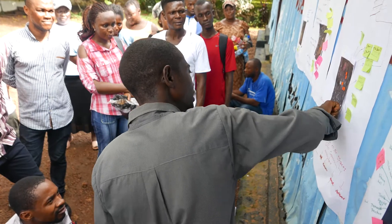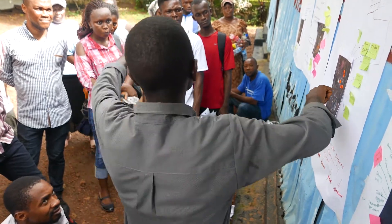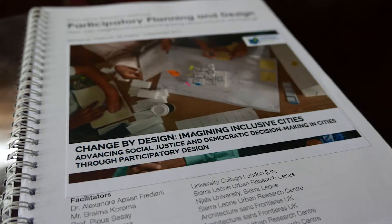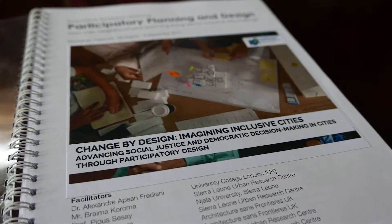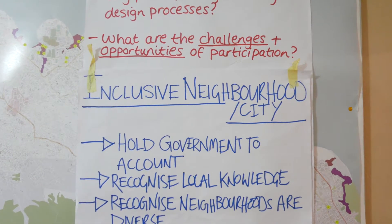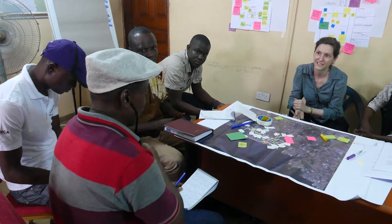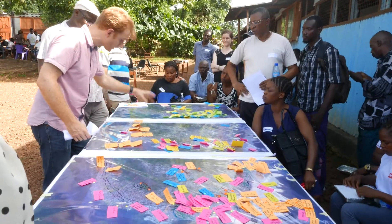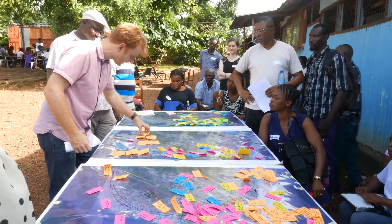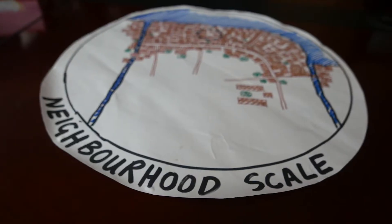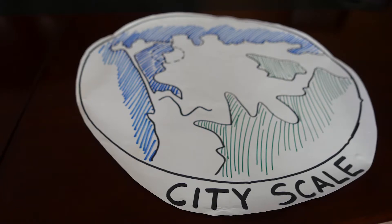The aim of this workshop, which used the ASF UK Change by Design methodology, was to explore how planning can bring about inclusive city making. Workshop attendees were split into three groups, each aiming to understand planning at a different scale — home, neighbourhood and city.